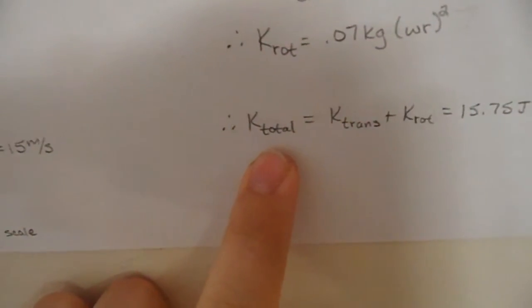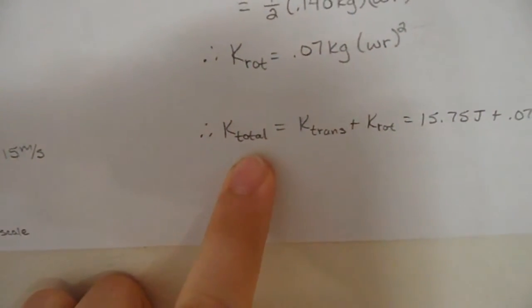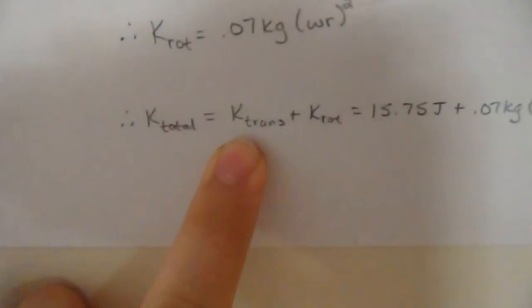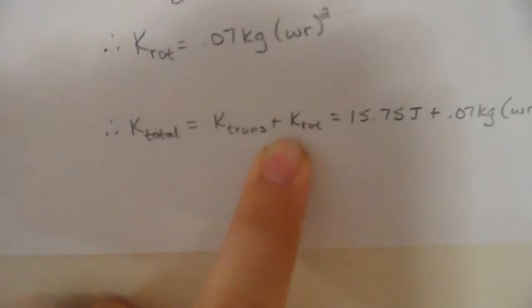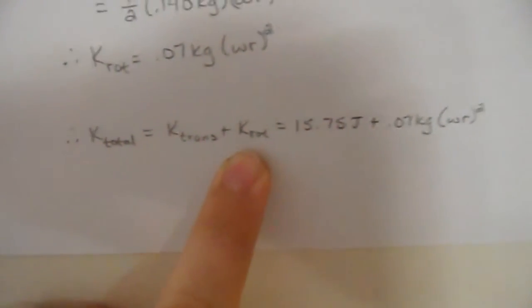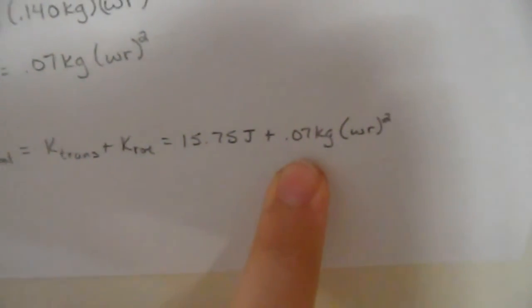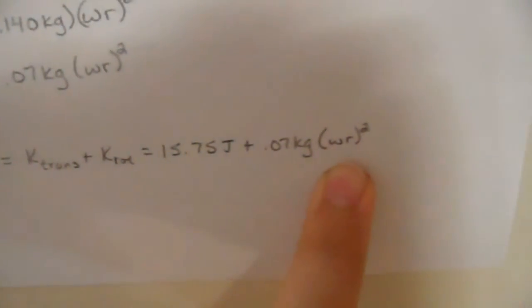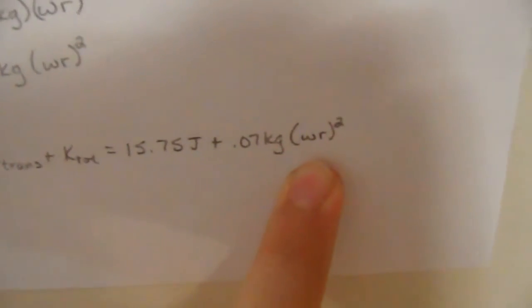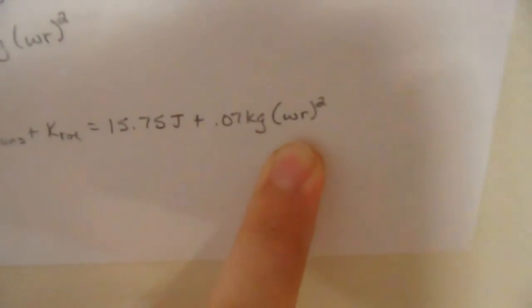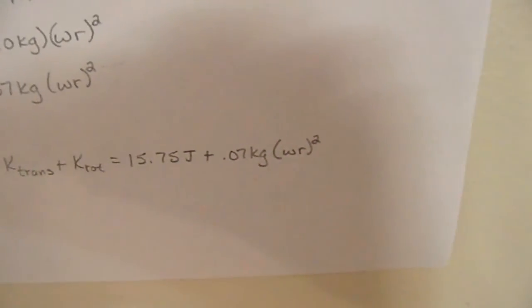Now, to plug that back into the total, we get the total kinetic energy equals the translational kinetic energy plus the rotational kinetic energy, which equals 15.75 joules plus 0.07 kilograms times the square of angular speed times the radius, which the units will work out to be joules.